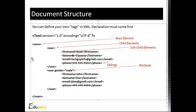Inside the root element we have child elements - for example a 'user' tag with an opening and closing tag. Inside the child elements we have sub-child elements, and you can keep nesting with no restriction on depth, though it should remain readable. In these child elements we have first name, last name, email, and phone number. First name, last name, email, and phone are siblings because they're on the same level. The user element is a parent of these elements, just as the root element is a parent for all elements.